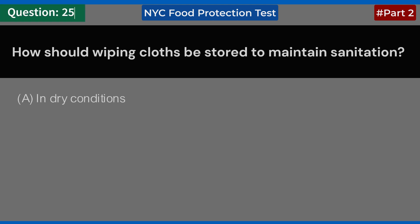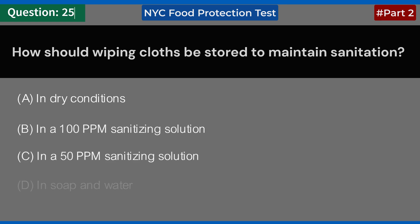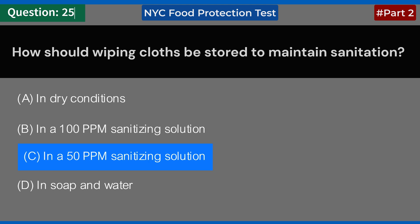How should wiping cloths be stored to maintain sanitation? A. In dry conditions. B. In a 100 ppm sanitizing solution. C. In a 50 ppm sanitizing solution. D. In soap and water. Answer: C. In a 50 ppm sanitizing solution.